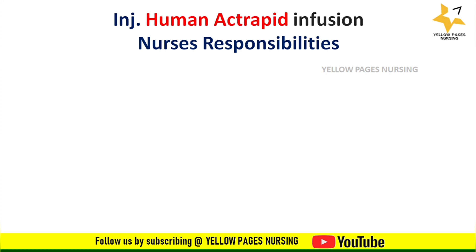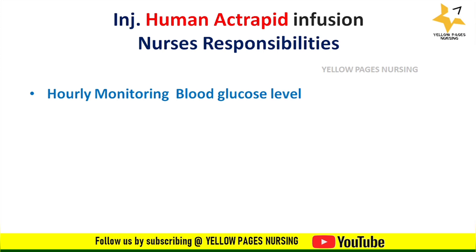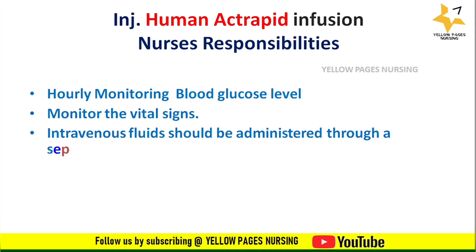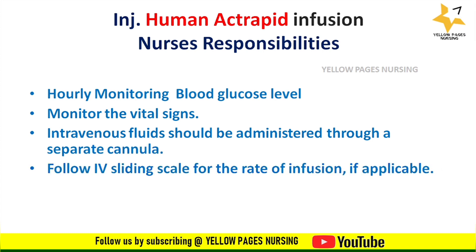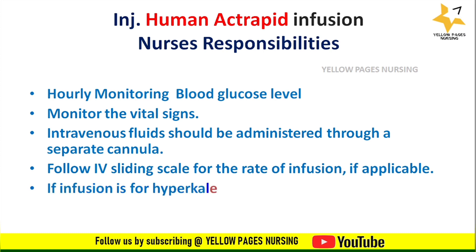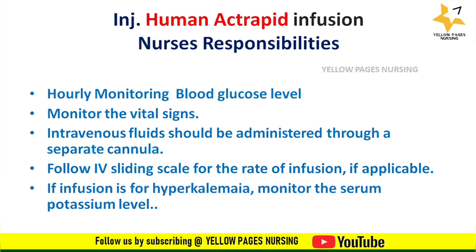Important nursing responsibilities during injection human actrapid infusion include: hourly monitoring of blood glucose levels, monitoring vital signs, administering intravenous fluids through a separate cannula, and following an IV sliding scale for the rate of infusion if applicable. If the infusion is for hyperkalemia, monitor the serum potassium level.